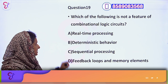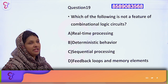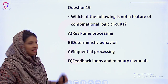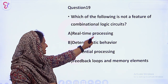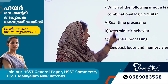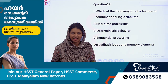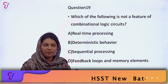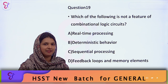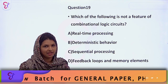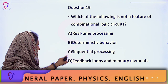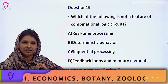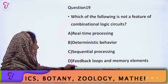All these characters are features of a combinational logic circuit — we have to answer this question. Because we have to learn combinational circuit and sequential circuit. A combinational circuit does not have sequential processing. The answer is Option C: Sequential Processing. This is a sequential processing feature — it's not a combinational logic circuit feature.